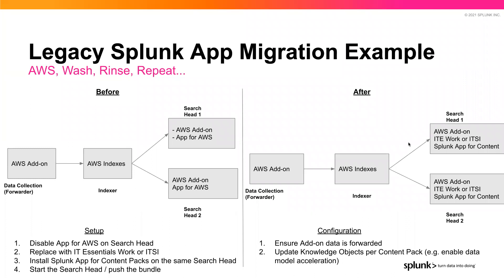Once you start the search head and push the bundle, the right-hand side will be your resulting infrastructure instance, with the AWS add-on, ITE Work or ITSI, and the Splunk app for content packs on the search head. In the configuration, ensure the add-on data is forwarded and update your knowledge objects for the content pack — for example, enabling data model acceleration. That is the four-to-six step process to migrate from your previous instance if you're an existing user of legacy apps for infrastructure. And if you're a new customer, this would be what your environment looks like at the forwarder, indexer, and search head.